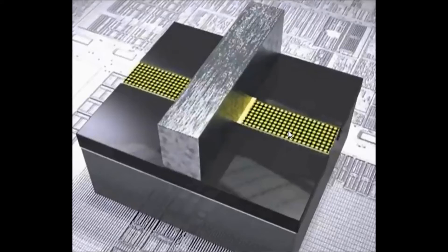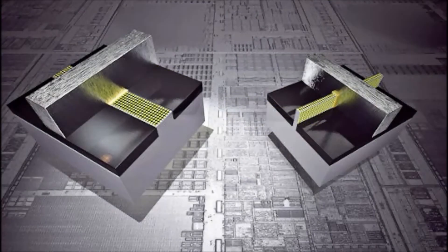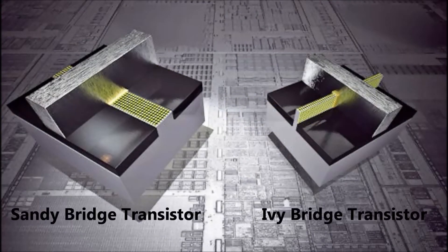The challenge with making very small switches which are very close together is that as the switches or transistors become smaller and more tightly packed together, the current meant for one transistor will leak to another transistor, and this will cause a computer to freeze or blue screen. This happens because electric current, like water, will always follow the path of least resistance. What Intel has done to combat this is to introduce what is called a Trigate transistor. It is called Trigate because, whereas previously there was one path that the current flowed down — as you can see here in the Sandy Bridge transistor — in a Trigate transistor, as you can see here, there are three paths that the current can flow down.